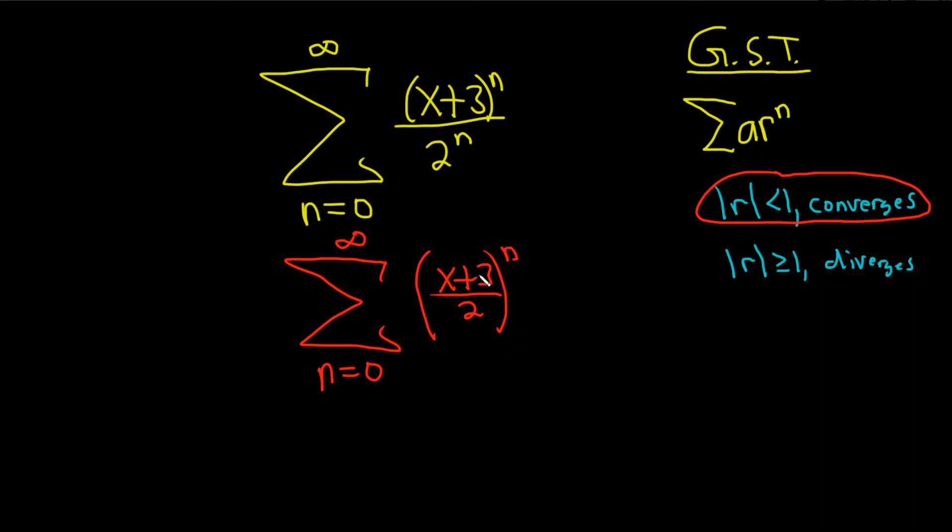So now we can identify r. R is whatever is being raised to the nth power. So r is equal to (x+3), and it's all over 2.